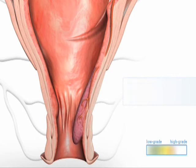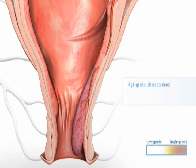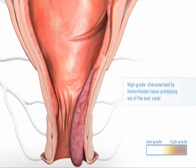High grades of hemorrhoids — that is, grade three and four — are characterized by hemorrhoidal tissue prolapsing out of the anal canal, whereby grade three hemorrhoids can still be pushed back into position.